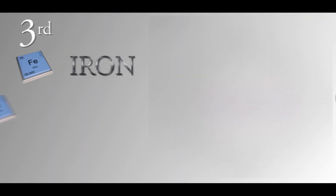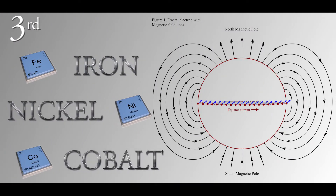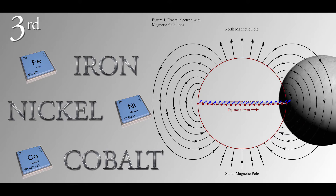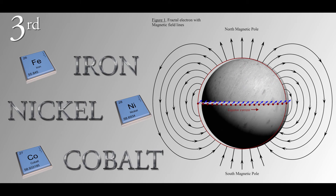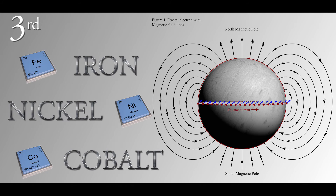Third, iron, nickel, and cobalt are all stable thermonuclear endpoints. Fusion of lighter elements stops releasing energy at iron, nickel, and cobalt. When cold enough, iron, nickel, and cobalt are all ferromagnetic. A negatively charged, planet-sized, magnetized cannonball is a good candidate for a cosmic scale electron.